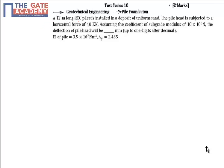This question asks that a 12 meter long RCC pile is installed in a deposit of uniform sand. The pile head is subjected to a horizontal force of 40 kN.